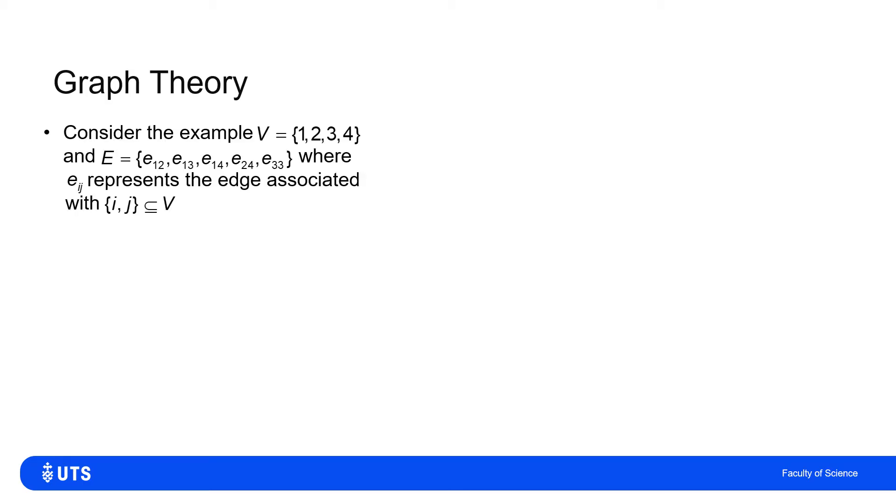So if I've got the set of nodes 1, 2, 3, and 4, and the set of edges, which I'm calling E1,2, E1,3, E1,4, E2,4, and E3,3,